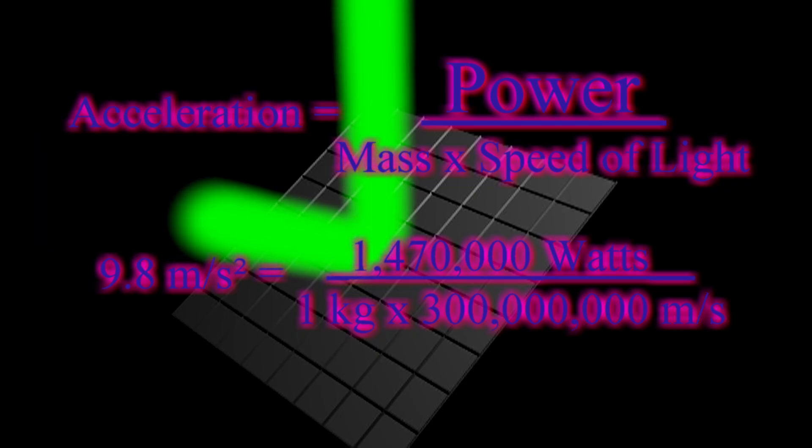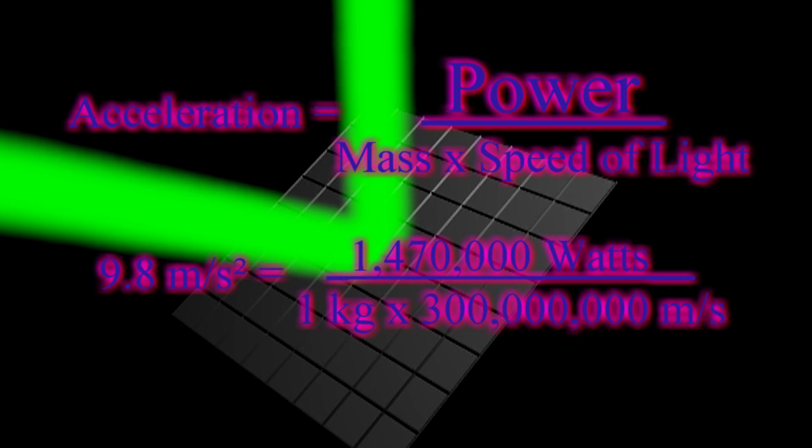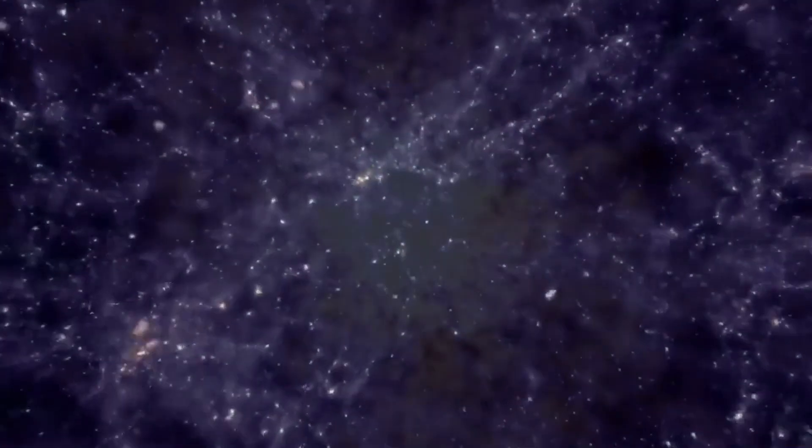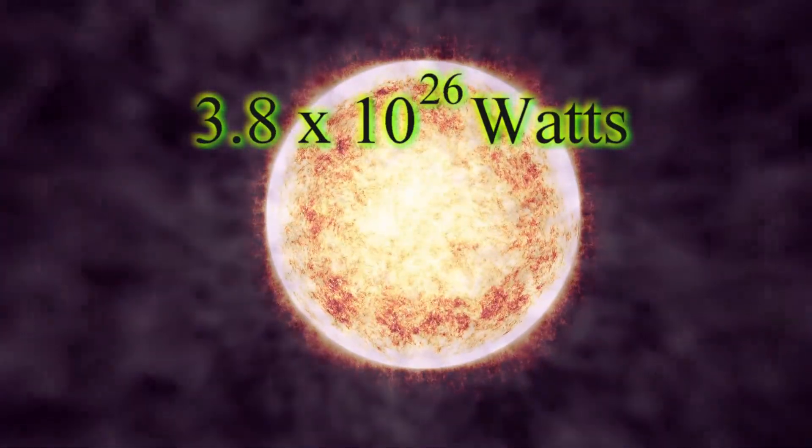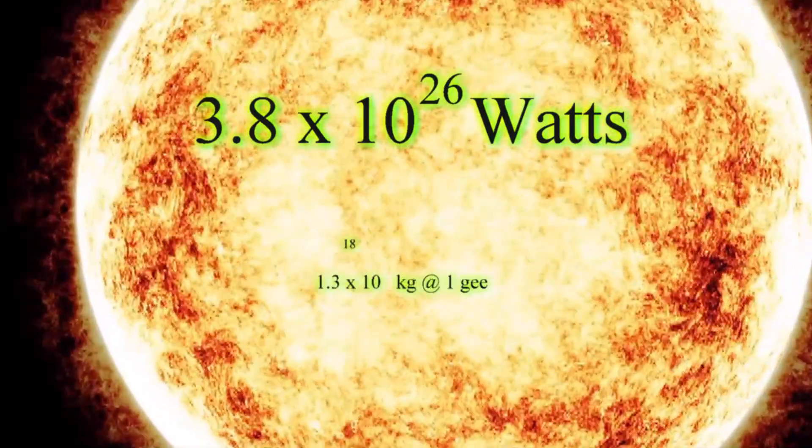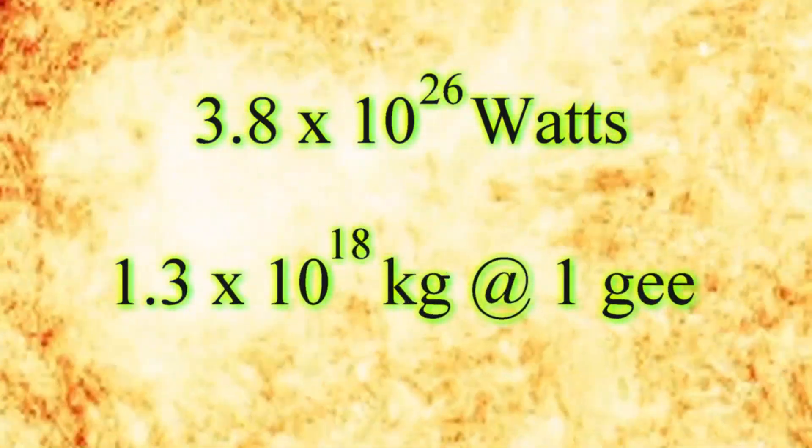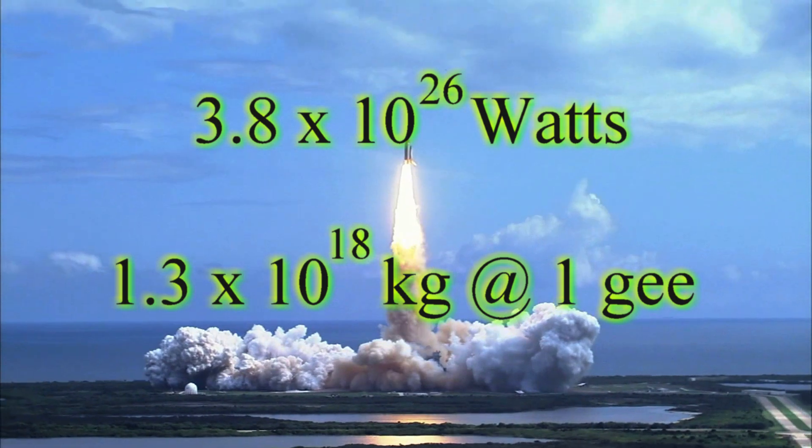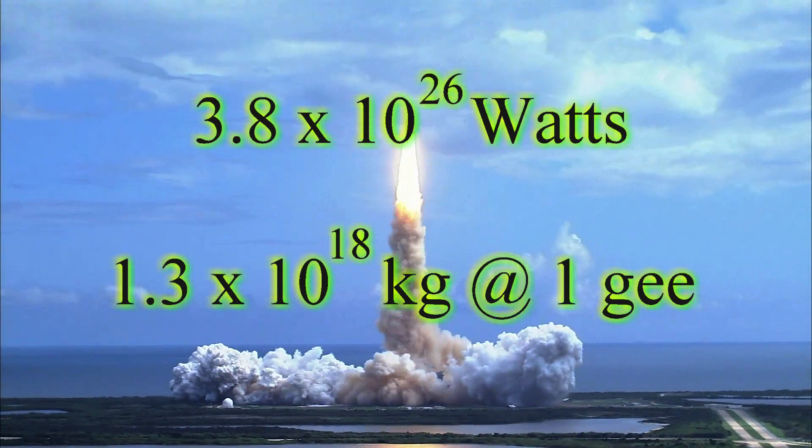That's what makes laser sails more attractive. You could hit something with a mirror on the back with concentrated light at a distance and give it a big boost to speed. And a real big boost to speed when you consider that the sun puts out 3.8 times 10 to the 26 watts of power, which means you could accelerate an object massing 1.3 times 10 to the 18 kilograms, or 1.3 billion megatons, at 1g constantly, and just one megaton makes for a very large ship.